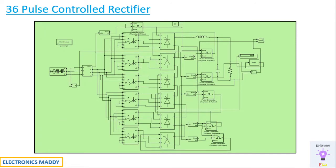This is the simulated circuit diagram of a 36 pulse control rectifier. The circuit looks complicated but trust me it's very simple. In case you have not watched the 24 pulse or 18 pulse control rectifier tutorials, that doesn't matter — I am going to start from scratch. A 36 pulse control rectifier can be constructed using six 6-pulse control rectifiers, or by using three 12-pulse control rectifiers, or by using two 18-pulse control rectifiers. We are following the first technique, constructing it using six different 6-pulse control rectifiers.